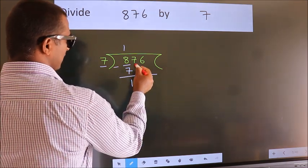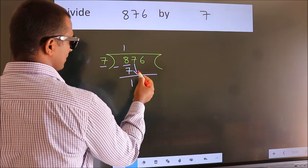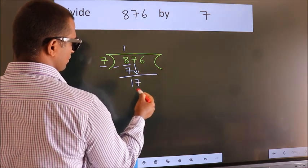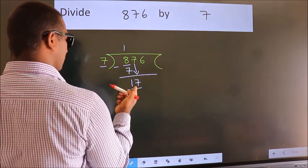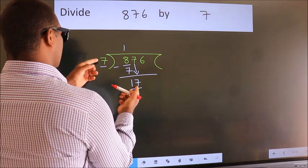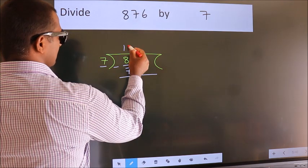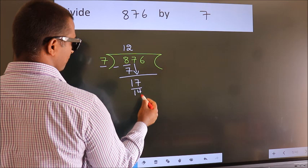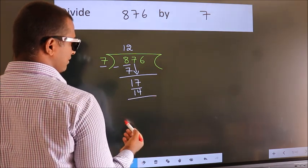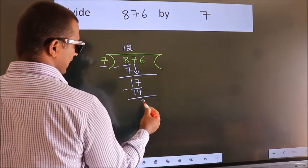After this, bring down the next number. So 7 down. So 17. A number close to 17 in the 7 table is 7 twos is 14. Now we subtract. We get 3.